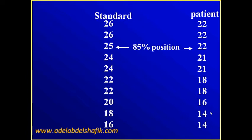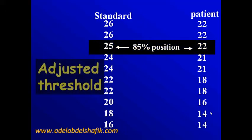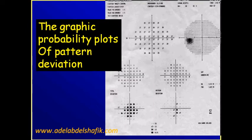So it's adjusted values. We raise the values. Now after raising these values, the computer will start to compare the new values, the adjusted values, with the normal. And the difference will be plotted here again in numbers. So in this area, the one we call total deviation, it's just direct comparison between the numbers we get here, the sensitivities of the different locations, and the normal.